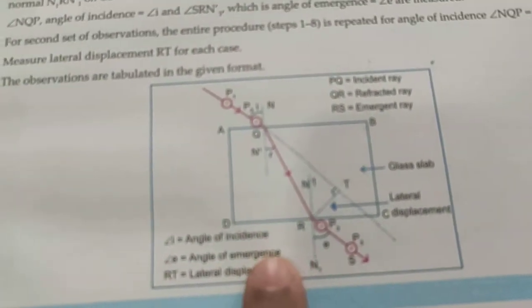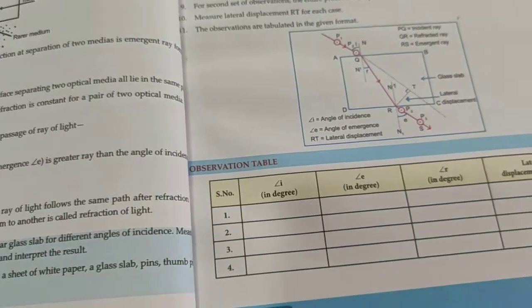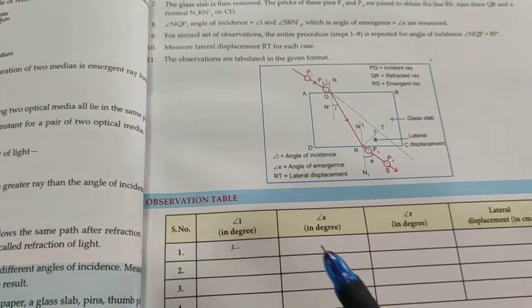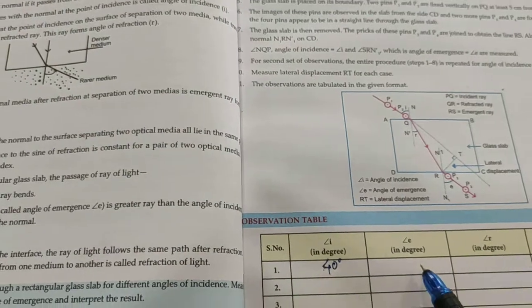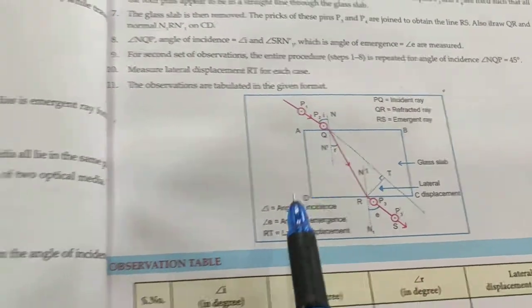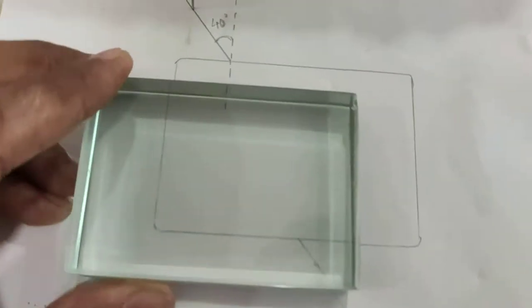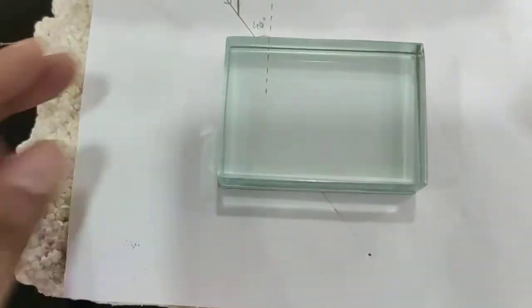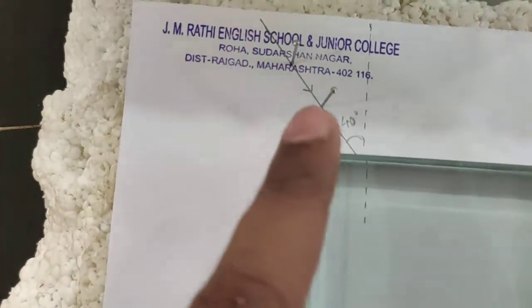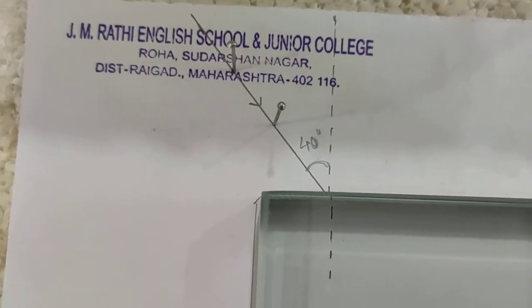Now for the procedure: as per the ray diagram, we fix two pins at a certain angle. We have decided the angle of incidence is 40 degrees. First, we fix the glass slab properly and draw a rectangle along its outline. We draw the normal at a particular point on the surface. The two object pins are placed along the incident ray direction, making an angle of incidence of 40 degrees.